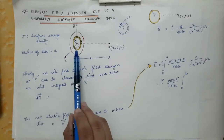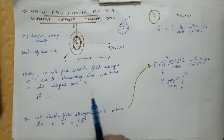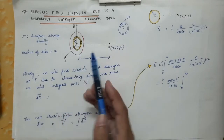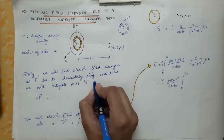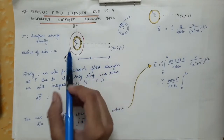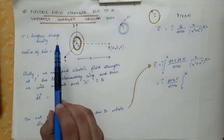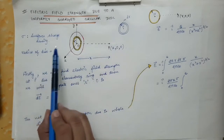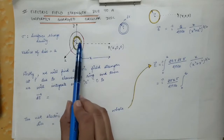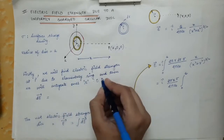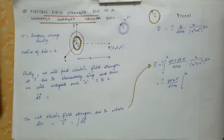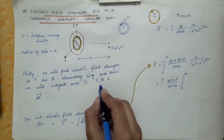The integration limits for r: the minimum radius can be equal to 0, and the maximum radius of the elementary ring can be equal to A, which is the radius of the whole disk. So r will vary from 0 to A.